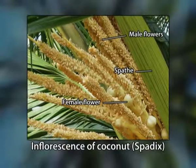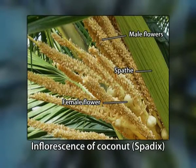Fourth, the inflorescence. The inflorescence present in coconut is called the spadix, which is borne singly in the axil of each leaf. The inflorescence develops within a strong, tough, pointy double sheath called the spathe. When the spathe is fully grown, the entire structure is collectively called the spadix.